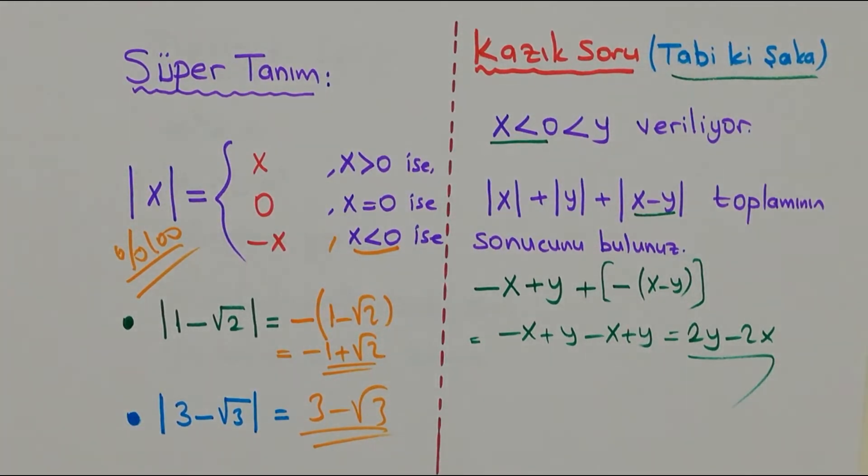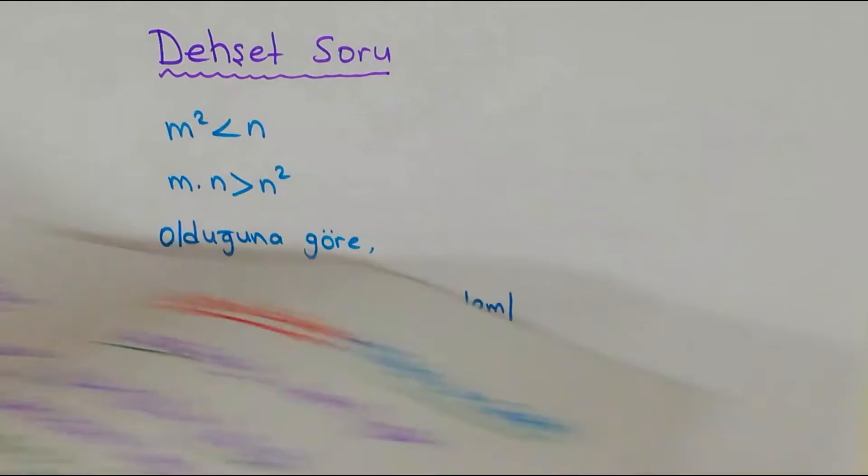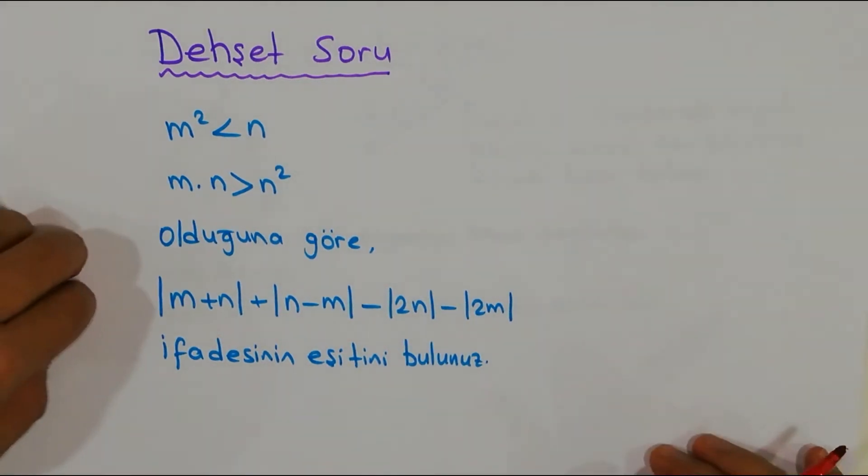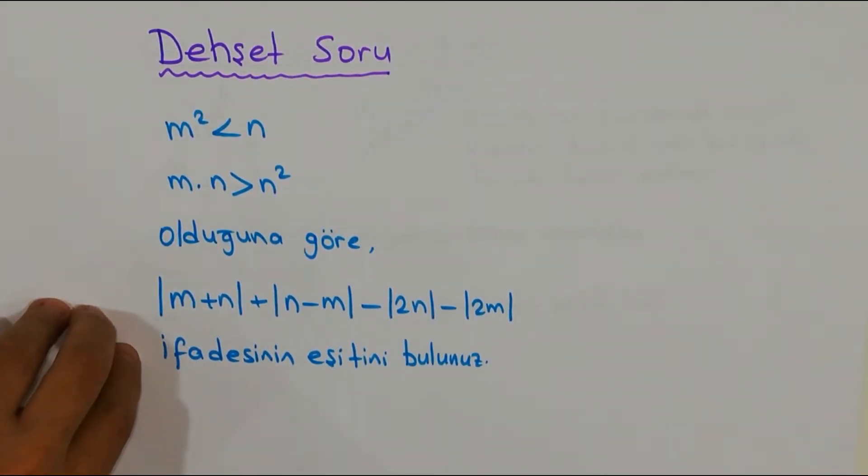Eksiyi dağıtıyorum arkadaşlar. Ne oldu şimdi? -x + y oldu arkadaşlar, 2y - 2x oldu. Gayet kazık bir soru değil mi arkadaşlar? Böyle gülümsediğinizi tahmin ediyorum. Gelelim dehşet soruya. Evet hocam, hemen başladık. Bu nedir, bu yorum sorularını biz nasıl yapacağız? Sakin, sakince izleyin arkadaşlar. Şimdi dedim ya ÖSYM son zamanlarda yoruma ağırlık vermeye başladı.